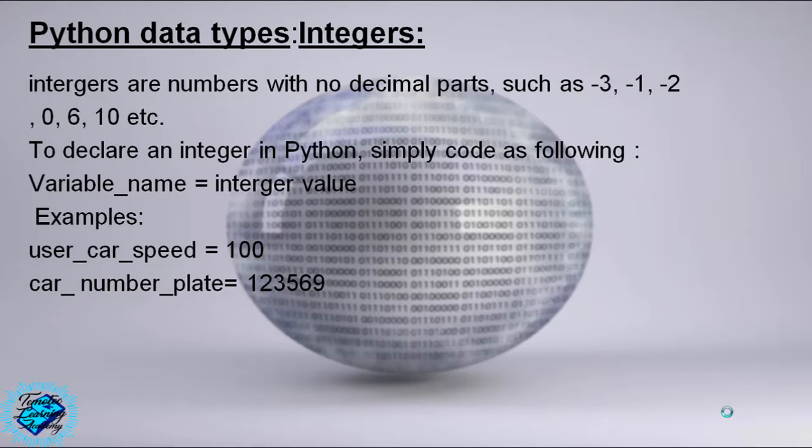Python data types: integers. Integers are numbers with no decimal parts, such as -3, -1, -2, 0, 6, 10.